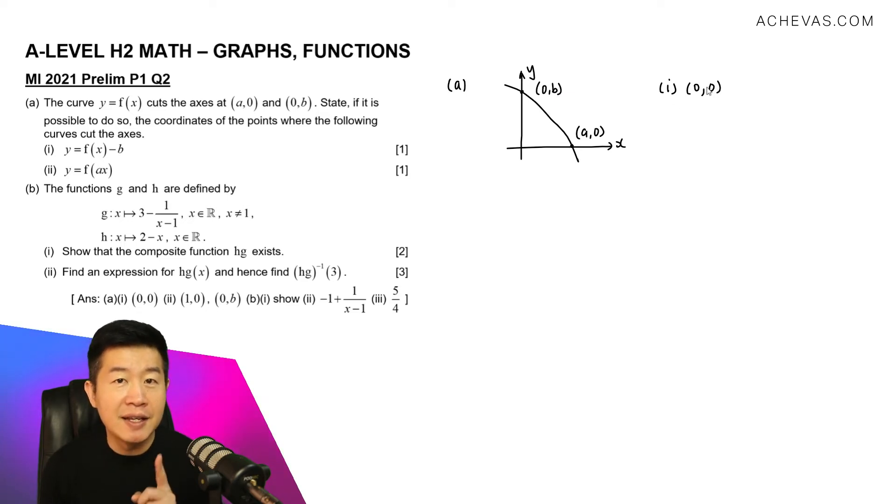As for the y coordinate, it's going to be b minus b, which will give us 0. And this will be the only x and y-intercept for part 1.